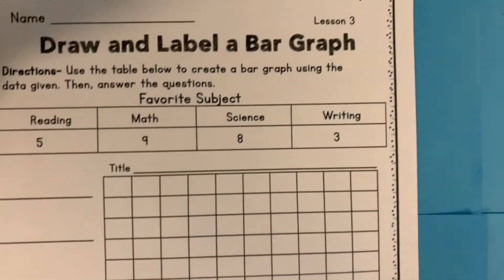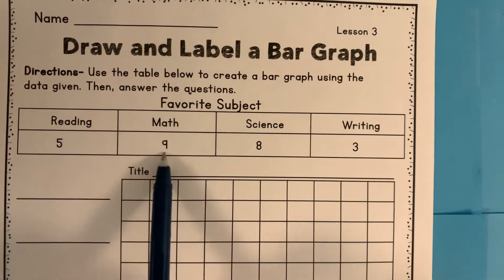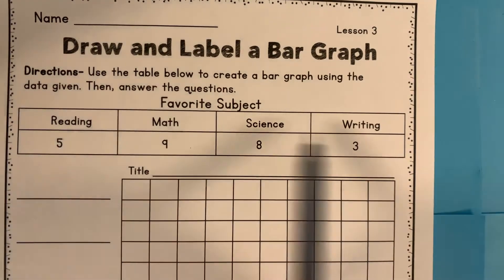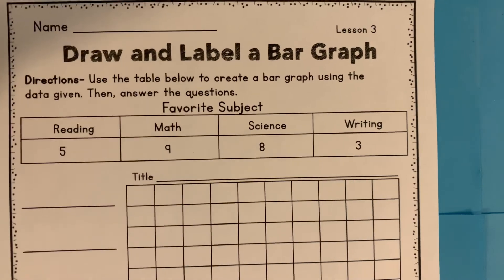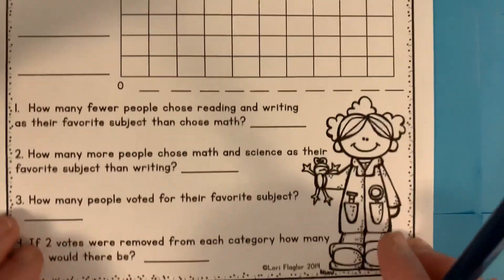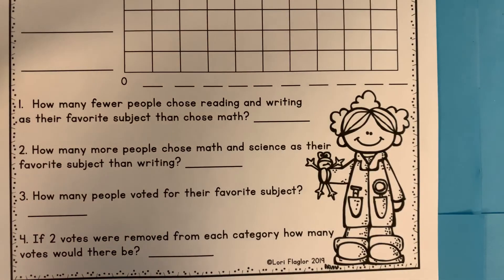The next page is similar. You're going to be doing the same thing except you're not using tally marks this time — you're using actual numbers. So you'll write reading, math, science, and writing, and then fill in the boxes for your bar, and then answer the questions at the bottom. Okay, see you later.